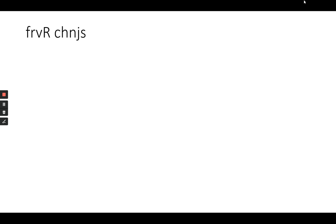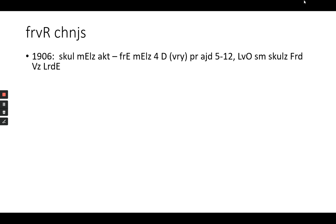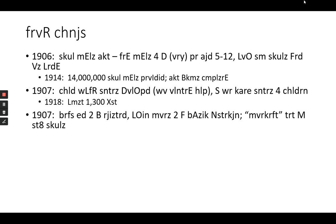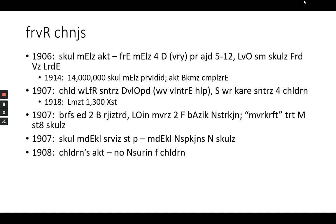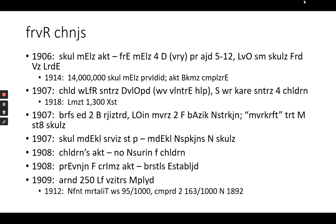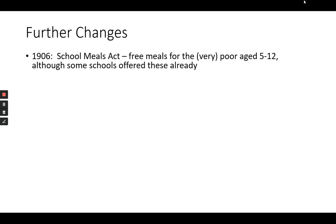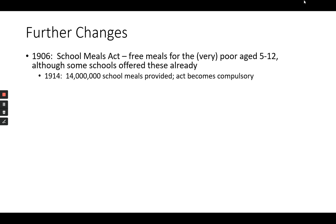Now, the Liberals also did many other things which helped the youth, but not always directly in schools. In 1906, we have the School Meals Act - free school meals for the very poor between ages 5 and 12, although some schools already offered this. By 1914, 14 million school meals are being provided and it becomes compulsory. This is one of the rare Liberal reform acts which is permissive but by 1914 becomes compulsory.